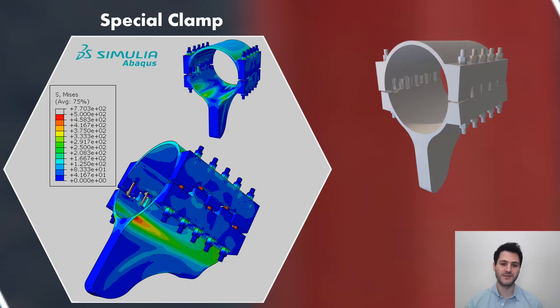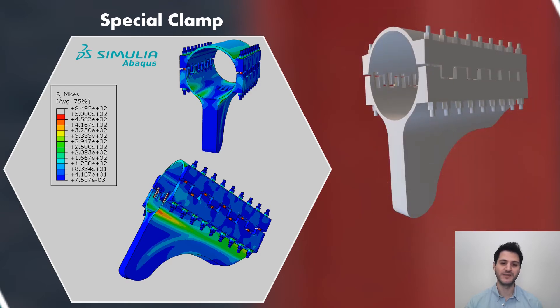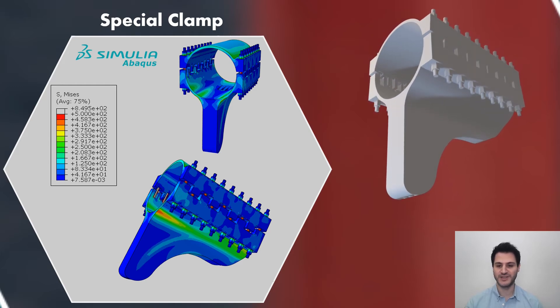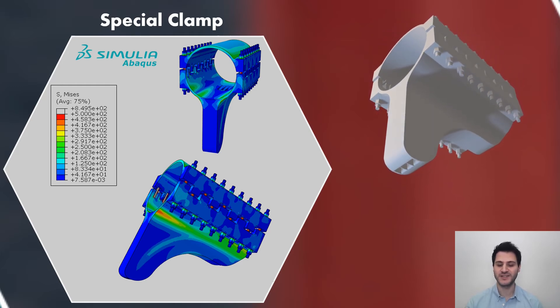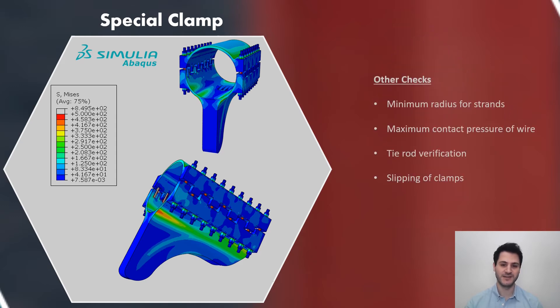Similarly, saddle clamps that allow three strand release are verified through finite element analysis on Abaqus. For saddle clamps, after the complete release of the strands, clamp trough edge is rounded for all directions in order to accommodate transverse movements of the hanger cables. Beside the advanced analysis, the minimum radius for strands, maximum contact pressure, tie rods and slipping of the clamps are verified according to design bases of the project and euro codes.